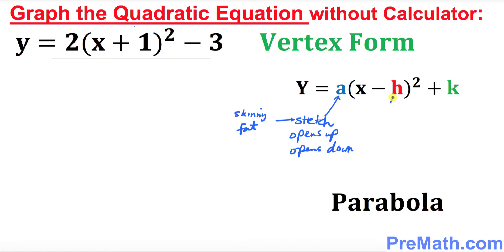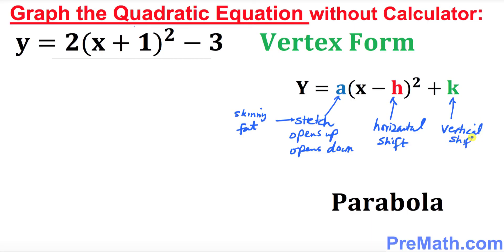'h' represents the horizontal shift, meaning the shift along the x-axis, while 'k' represents the vertical shift, which means along the y-axis. Given all this info, we're going to find out what our 'a', 'h', and 'k' are in this given equation.